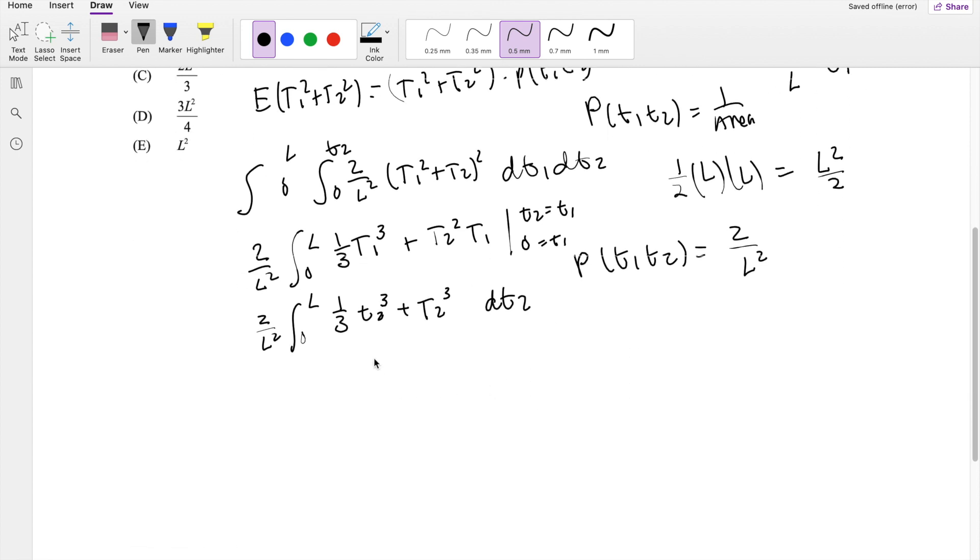Ooh, baby. So then this one will be just T2 to the 4th over 12, plus T2 to the 4th as well, over 1 fourth, integrating from 0 to L. The lower limit is going to give you 0. So this is left with 1 twelfth, L fourth, plus 1 fourth, L fourth, times 2 over L squared.